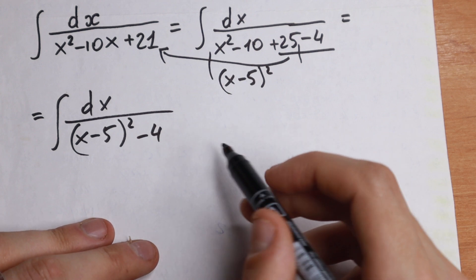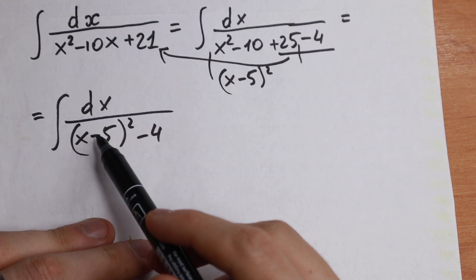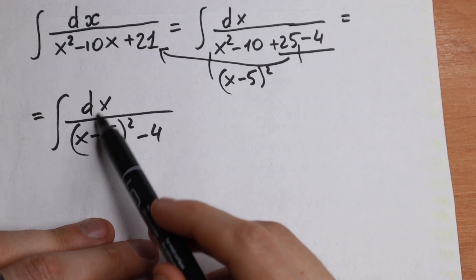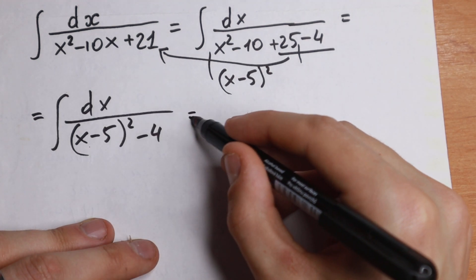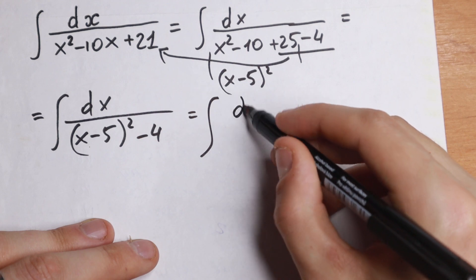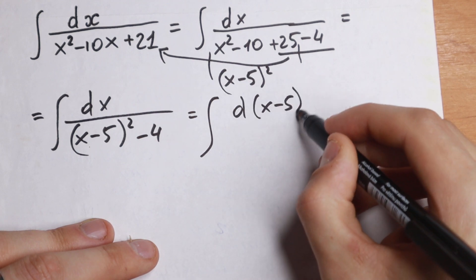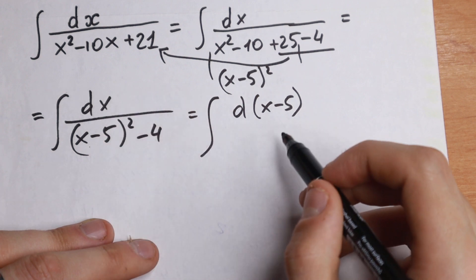So if we have, in our differential sign, we have x minus 5, the same as right here, it will be a really good case. Because if we write this as d(x minus 5), nothing change. Because if we find derivative, this will be the same as right here.